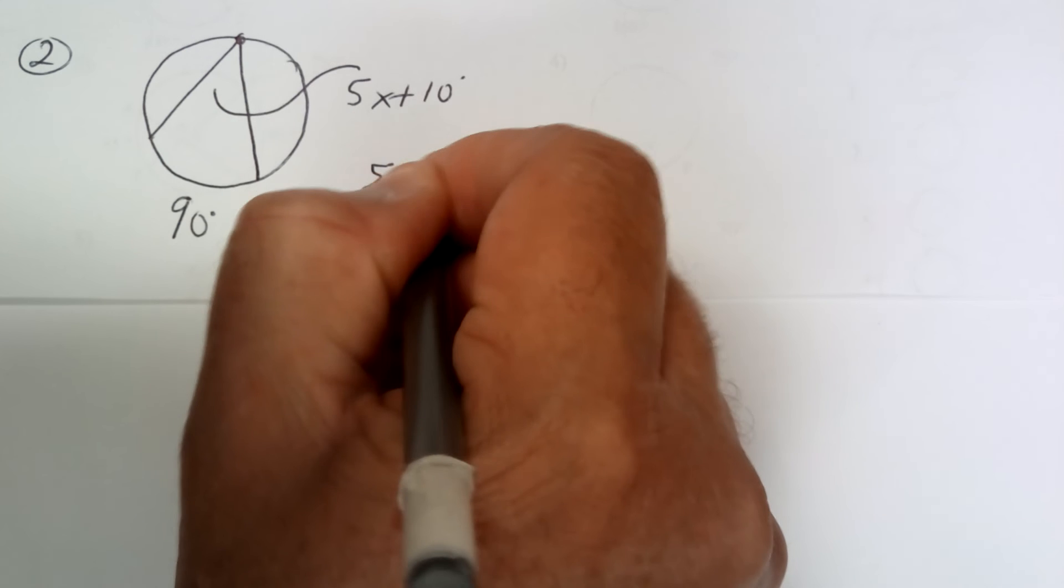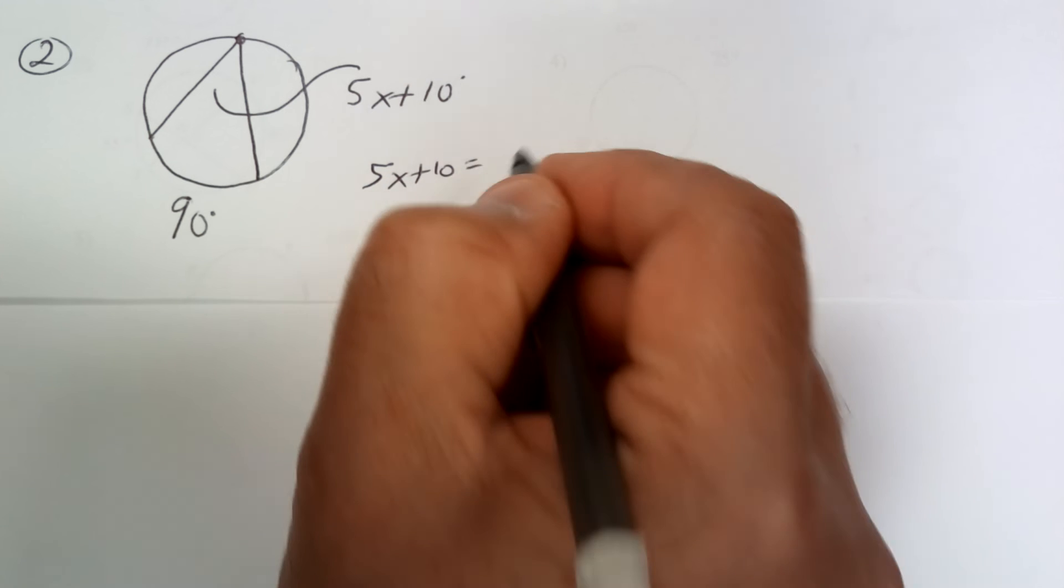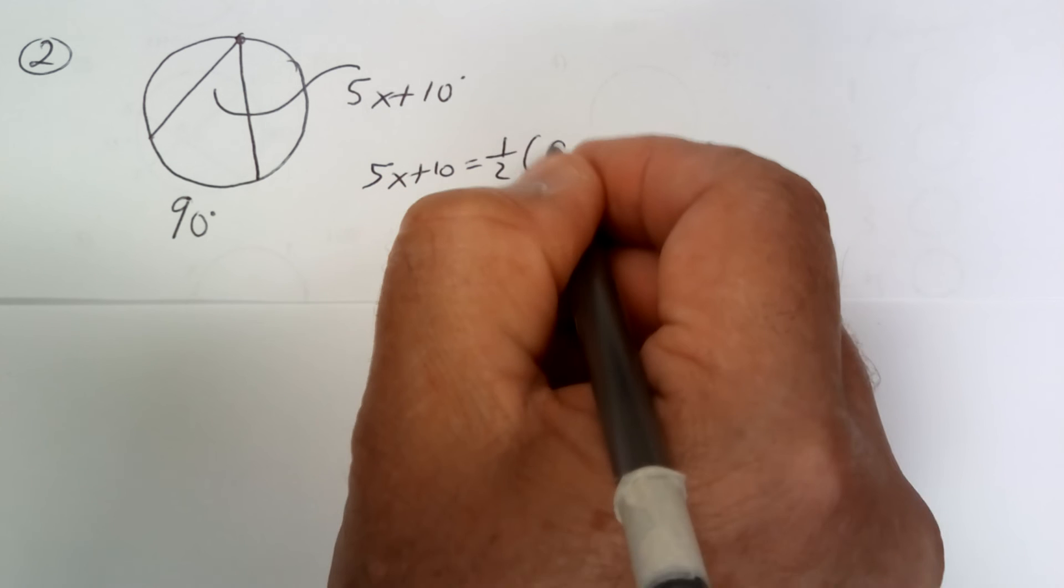So since the vertex is on the circle, we're going to say the angle, which is all of this, is equal to half of the intercepted arc. Well, half of 90 is 45.